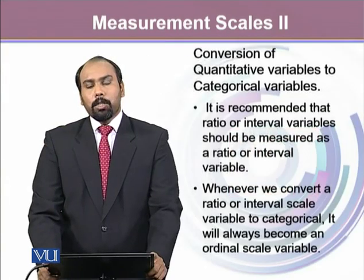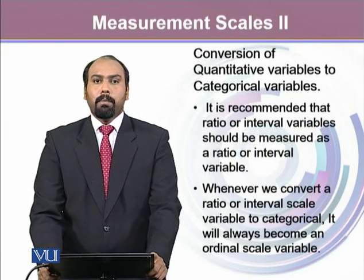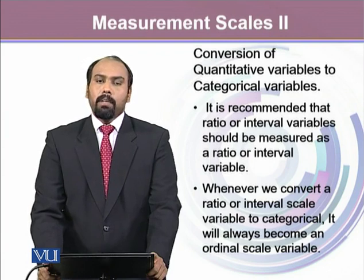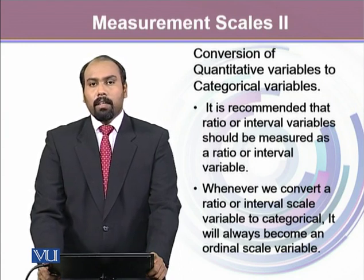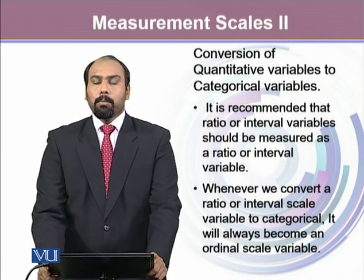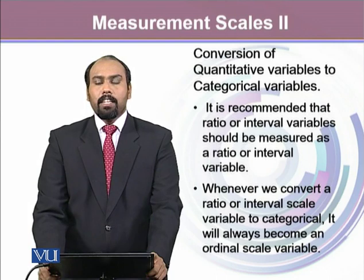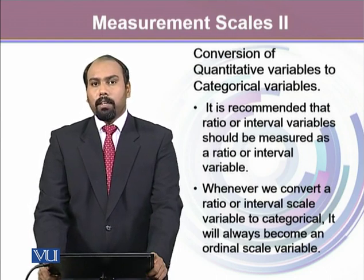We already talked about how we convert a quantitative variable into a qualitative variable. Similarly, if we make such a conversion, our measurement scale also changes. If a quantitative variable is measured on a ratio or interval scale, it can be converted into a qualitative variable, and when such conversions happen, the variable turns out to be ordinal.